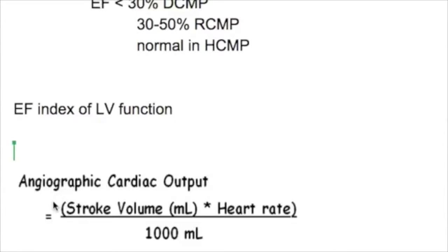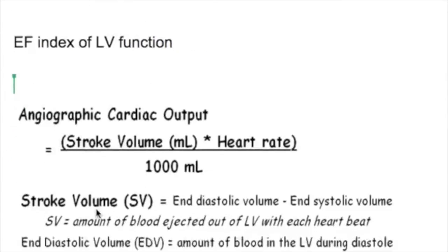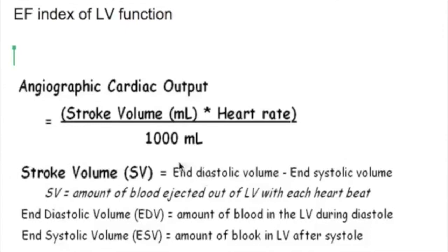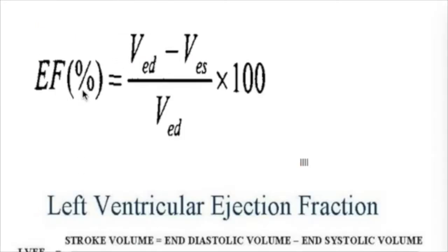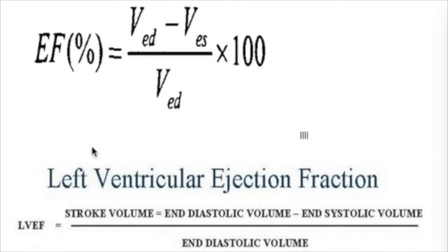Stroke volume is the amount ejected per beat, usually 80 ml normally, and cardiac output is the amount ejected per minute, which is the product of stroke volume and heart rate. At stroke volume of 80 ml there are two volumes: end diastolic volume and end systolic volume. The blood present at end diastolic volume is ejected at systole, but not all the blood is ejected — normally only 65 percent is ejected out. Any increase in end diastolic volume will reduce the ejection fraction, which is normally about 65 percent.